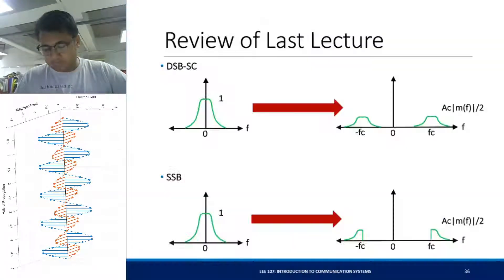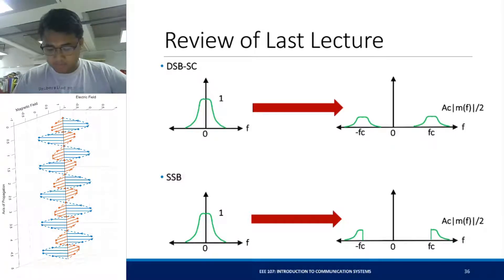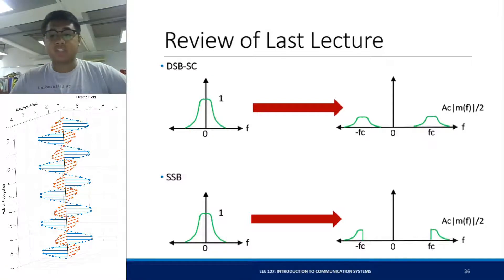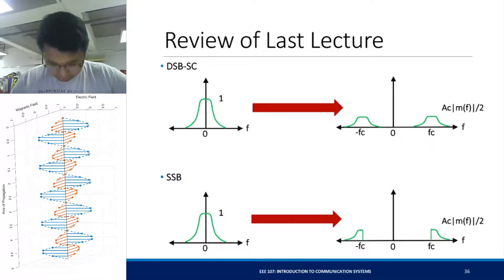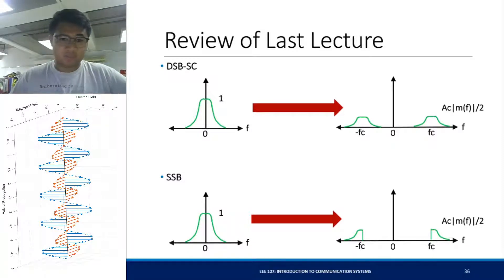First, a review of the last lecture. I introduced to you the DSBSC and the SSB. The main difference is that for SSB, you're only using one sideband of your original signal to transmit information, and it saves bandwidth compared to the DSBSC. However, the SSB signal is difficult to implement.